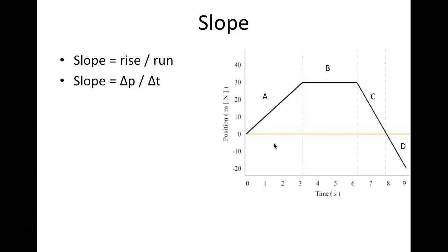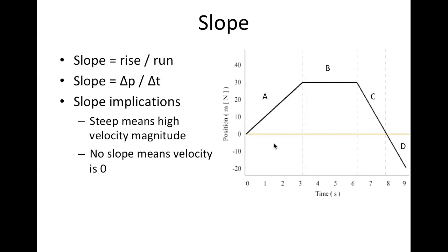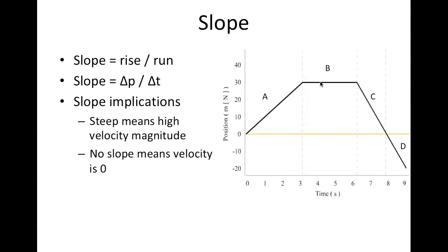Looking at the slope: when we have no slope, we have no velocity — the position is not changing as time goes on. When we have a slope going downward, position is moving in the negative direction as time goes on — that is a negative velocity.